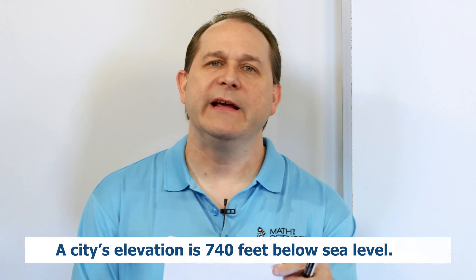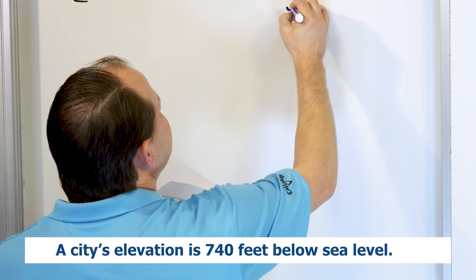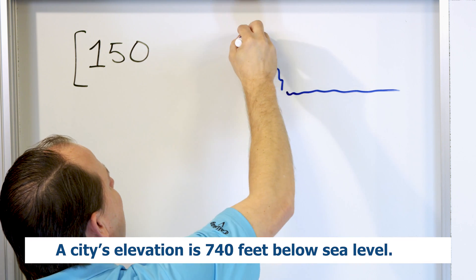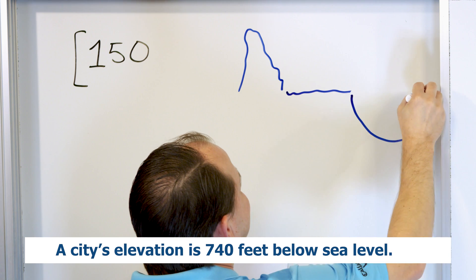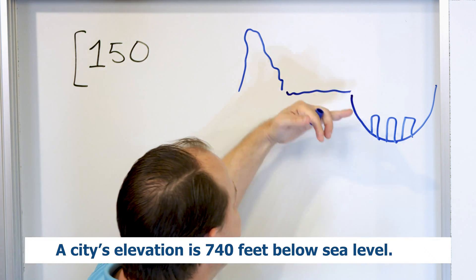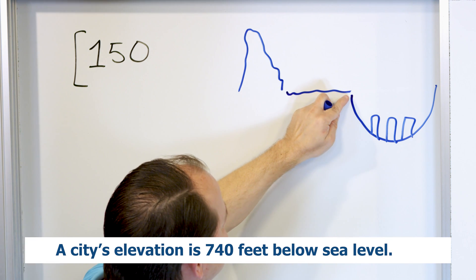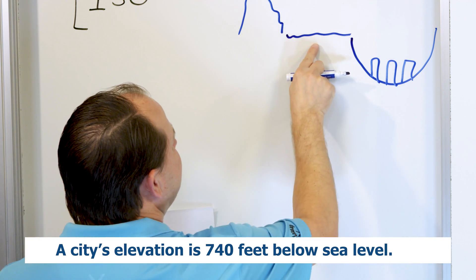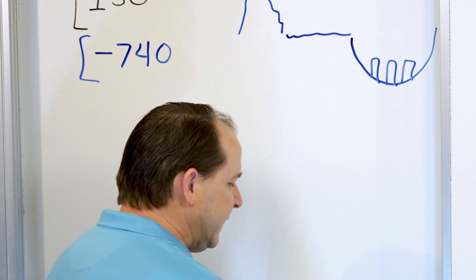Next problem: a city's elevation is 740 feet below sea level. To show you what that means — here you have the sea, and sea level is our reference. The numbers that are higher than sea level are positive, like a mountain over here would be positive above sea level. But if there was a valley and you built your city down in the bottom of the valley, then the city would be below sea level. The values below sea level are what we would call negative — the opposite of the positive number.